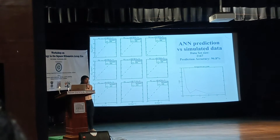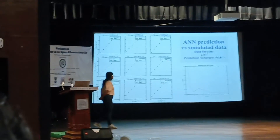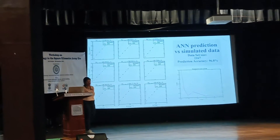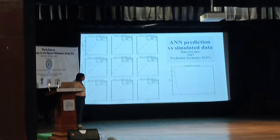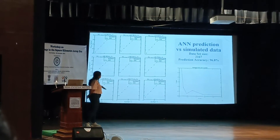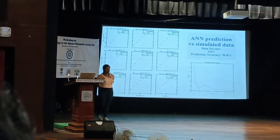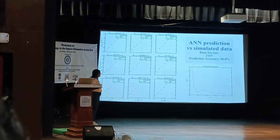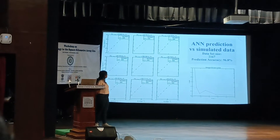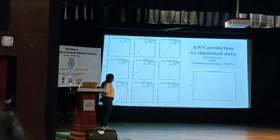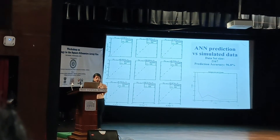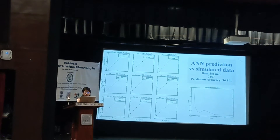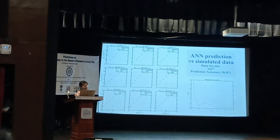80% of the dataset was used to train the emulator, and this is what we came up with. We achieved a prediction accuracy of 96.8% from our model. These plots show comparisons of that model. The solid line shows the simulated CII power spectrum data, and the dots show the emulator CII power spectrum for the corresponding parameter values. This is basically how the emulator performed.